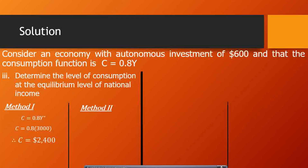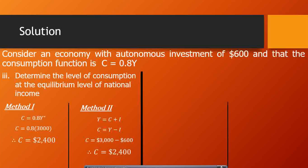Method 2 uses the aggregate demand formula: Y = C + I, rearranged to C = Y minus I. With equilibrium income Y = $3,000 and investment I = $600: C = $3,000 minus $600 = $2,400. Therefore, consumption at the equilibrium level of national income is $2,400.